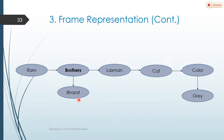Here Ram, Brother, Lakshman, and Bharat — this one is the frame, also called a slot. Ram is the entity. In software engineering terms you say entity and attribute; here we use frame and slot. Ram, Bharat, Lakshman, and Brother are the facts. Cat, color, and gray are also facts. So here we represent our name, number, and value using a fact.